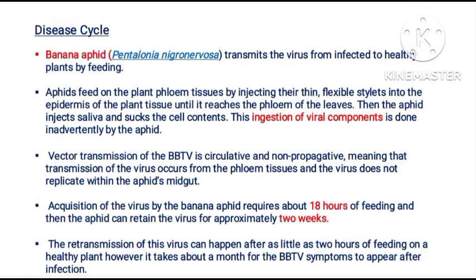Coming to the disease cycle: the banana aphid, Pentalonia nigronervosa, transmits the virus from infected to healthy plants by feeding. Aphids feed on the plant phloem tissue by injecting their thin flexible stylet into the plant tissue until it reaches the phloem of the leaves. Then the aphid injects saliva and sucks the cell contents. This injection of viral components is done inadvertently by the aphid vector.